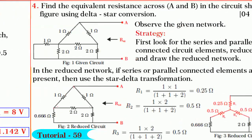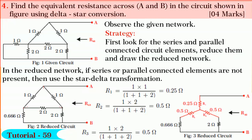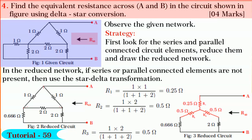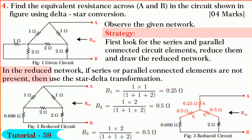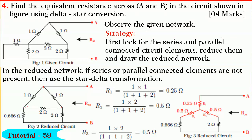It is simple, isn't it friends? Next we shall solve Question 4. In this question, we are required to find the equivalent resistance across A and B in the circuit shown in figure by using delta-star transformation. Observe the given network. The strategy will be: first look for series and parallel connected circuit elements, reduce them, and draw the reduced network. In the reduced network, at any stage, if series or parallel connected elements are not present, then use star-delta conversion. Observe the given network: 1 ohm and 2 ohm are in parallel, and their equivalent is 0.666 ohm as shown in figure.